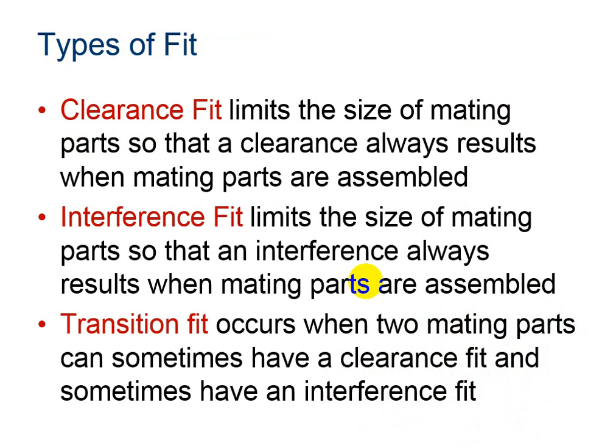There are three different types of fit that parts can have. The first type is a clearance fit, which limits the size so that there is always clearance when parts are mated. This means there will be a little bit of room to move when you try to put the two parts together. Interference fit limits the size of the part so that whenever you are mating you have a snug fit. And often you have to force the pieces together when you have an interference fit. Transition fit occurs when the two mating parts can sometimes have clearance fit or sometimes have interference fit.